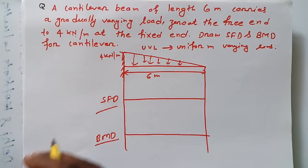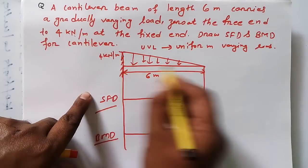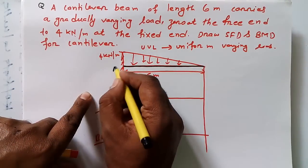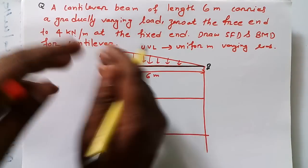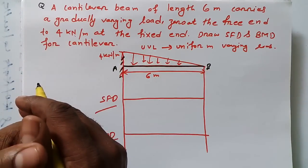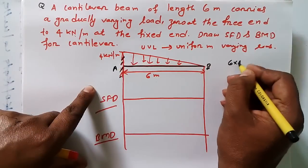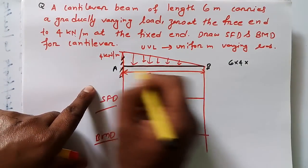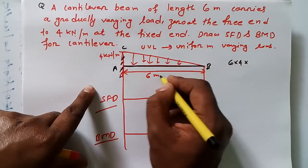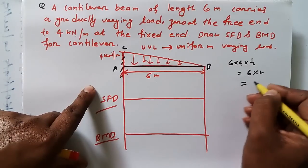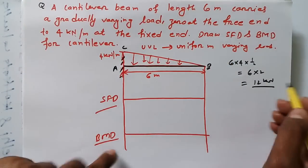Let me find out how much load is acting on this beam. Suppose the cantilever beam is named AB — the left side is fixed and the right side is free. The total load acting on beam AB would be the area of triangle ABC, which is base times height times half: 6 × 4 × ½ = 12 kilo Newton. So the total load acting on this beam is 12 kilo Newton.